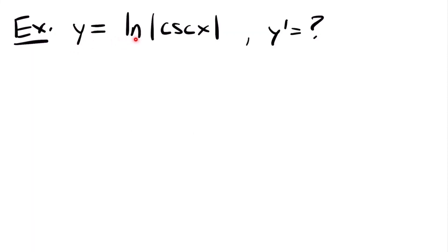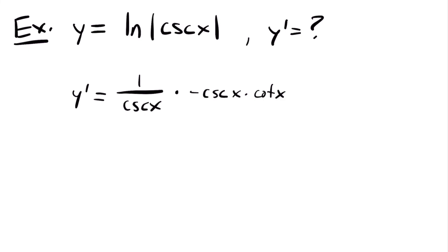Next, y equals the natural log of the absolute value of csc(x), and we want y prime. The absolute value bars just ensure positive values for the natural log and don't change the derivative process. So y prime equals 1/csc(x) times the derivative of csc(x), which is −csc(x)·cot(x). The csc(x) terms cancel, leaving y prime equals negative cot(x).